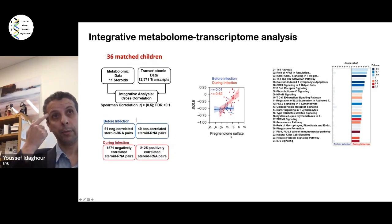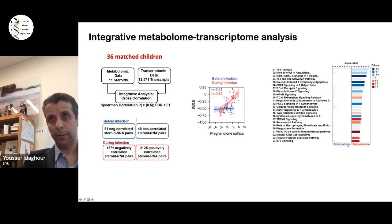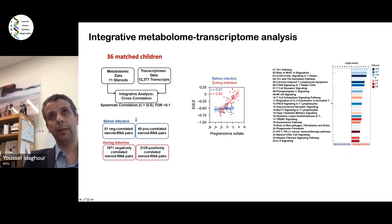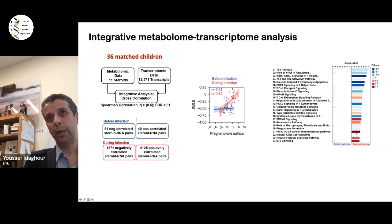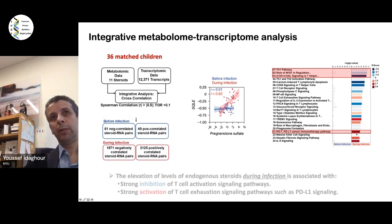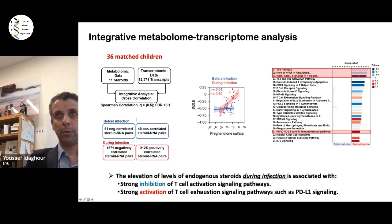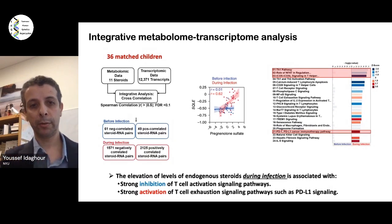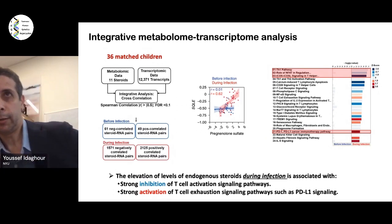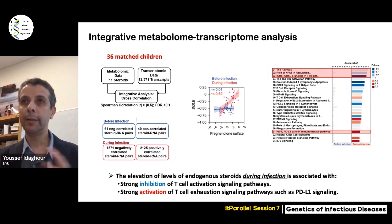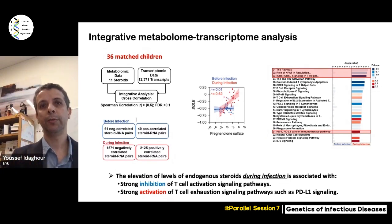We took all genes significantly associated with these steroids and did Ingenuity pathway enrichment analysis in both before-infection and during-infection stages. You can clearly see a signal relating specifically to T-cell function or lymphocytes in general — this effect is not significant whatsoever before infection. The disease score indicates either inhibition in blue or activation in red of those pathways. In particular, what I'd like to highlight is a strong inhibition of T-cell activation signaling pathways and strong activation of T-cell exhaustion signaling pathways, including the PDL1 signaling pathway — all hinting to inhibition of T-cell function and lymphocytes in general.